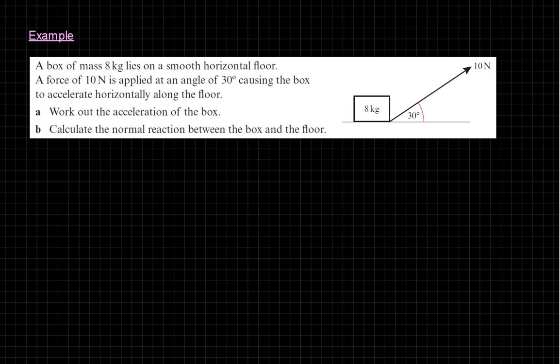Now let's look at some examples. We've got a flat surface, an 8-kilogram box with a force of 10 newtons applied at an angle of 30 degrees — work out the acceleration of the box and calculate the normal reaction between the box and the floor. The weight is 8 kilograms times g, we've got 10 cos 30 going horizontally and 10 sin 30 going upward. The surface is smooth so there's no friction.